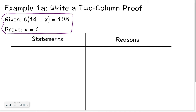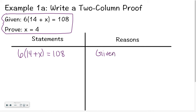Your very first step, always, in writing a proof — and yes, I know it's obnoxious to say the same word three times, but it's obnoxious not to remember to do this — is easy points. You start out by writing your given information. My first step is always to write the given.